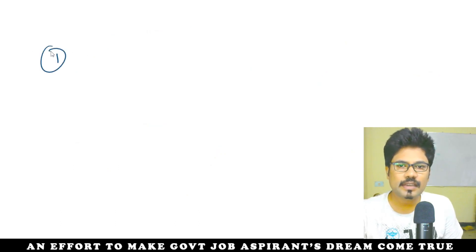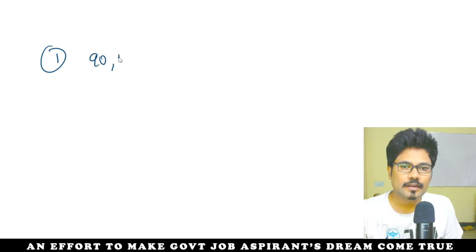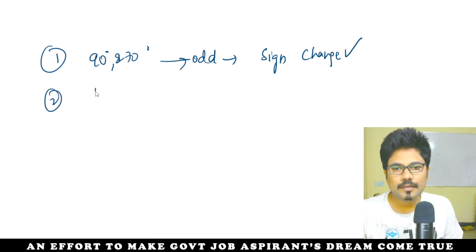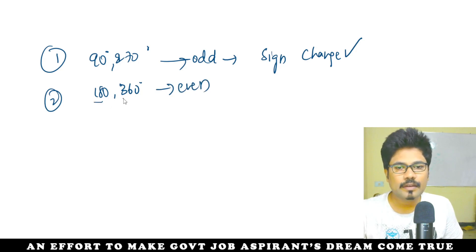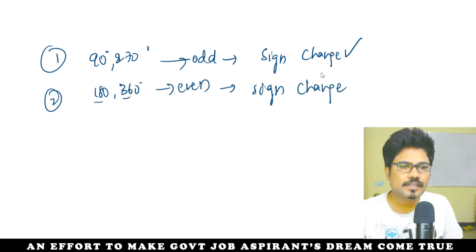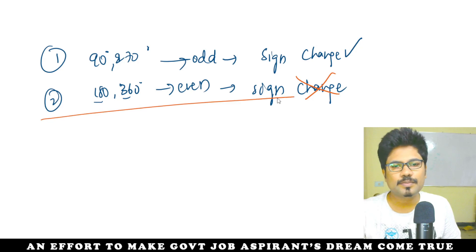Now the sign convention rule: at 90 and 270 degrees — which are odd multiples of 90 — the sign changes. That means the function name changes: sin becomes cos, cos becomes sin. At 180 and 360 degrees — which are even multiples of 90 — the sign does NOT change. This is the first point.